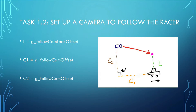Where the purple dot denotes the view target of the camera, and the black arrow is the racer's heading. In the graph, we have c1 equals c2 equals g_follow_cam_offset, and l equals g_follow_cam_look_offset.